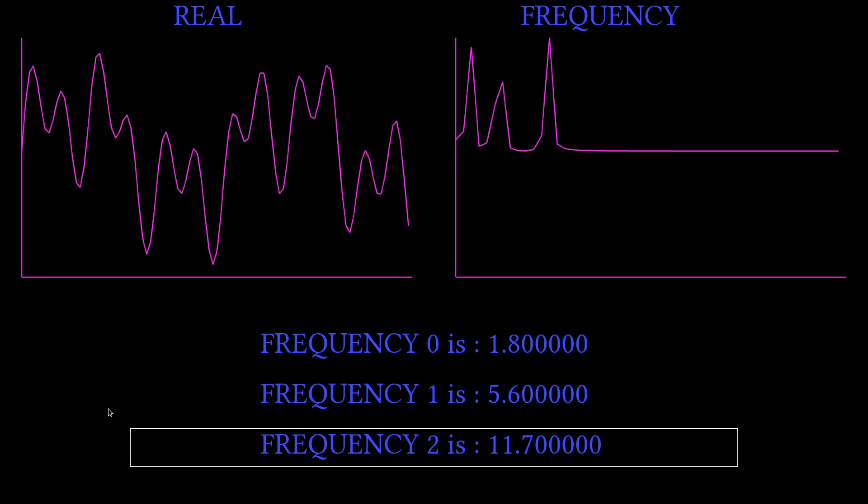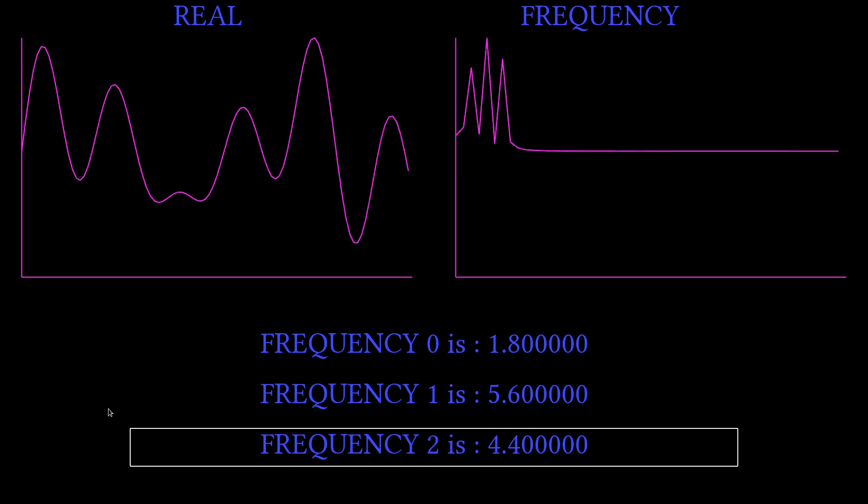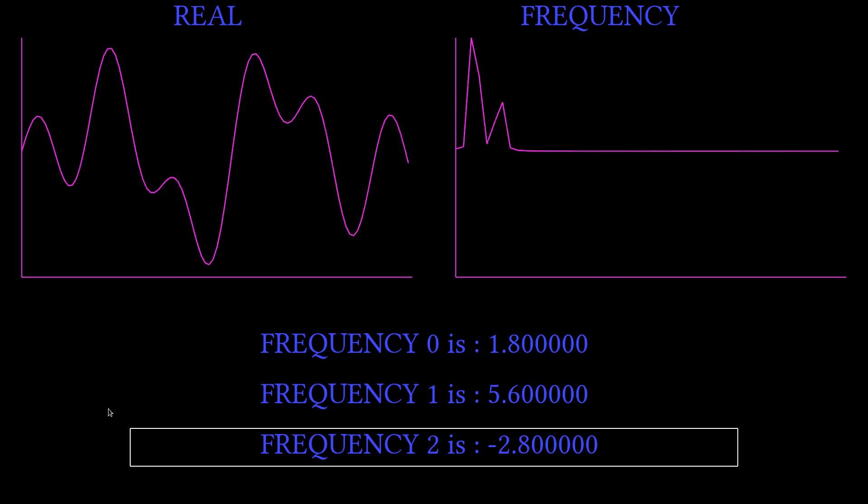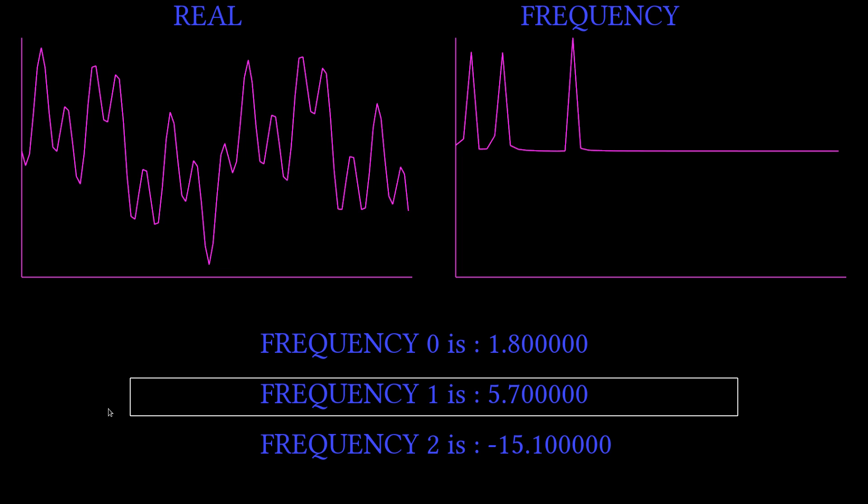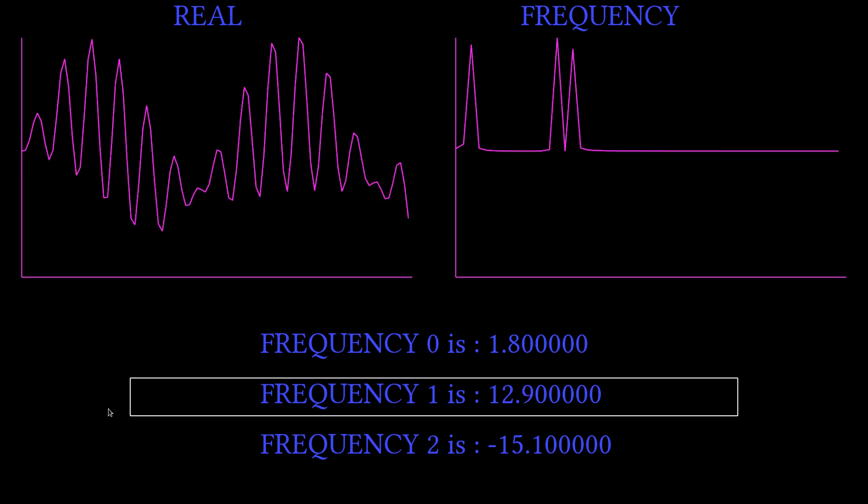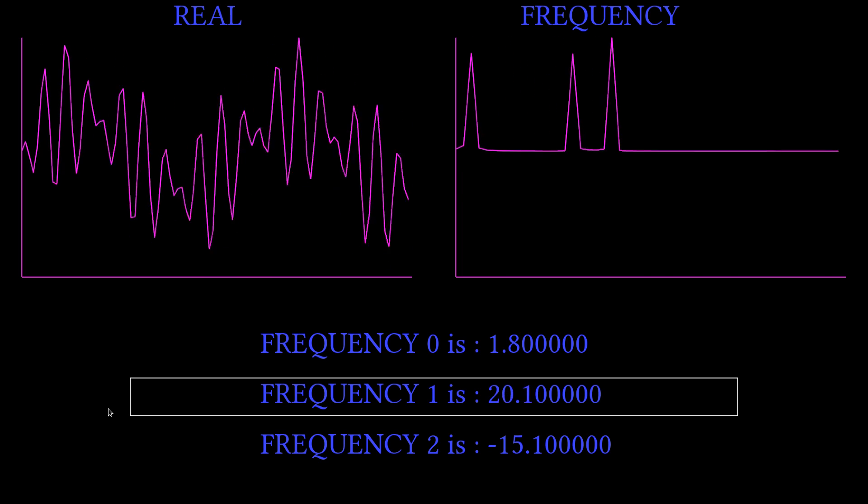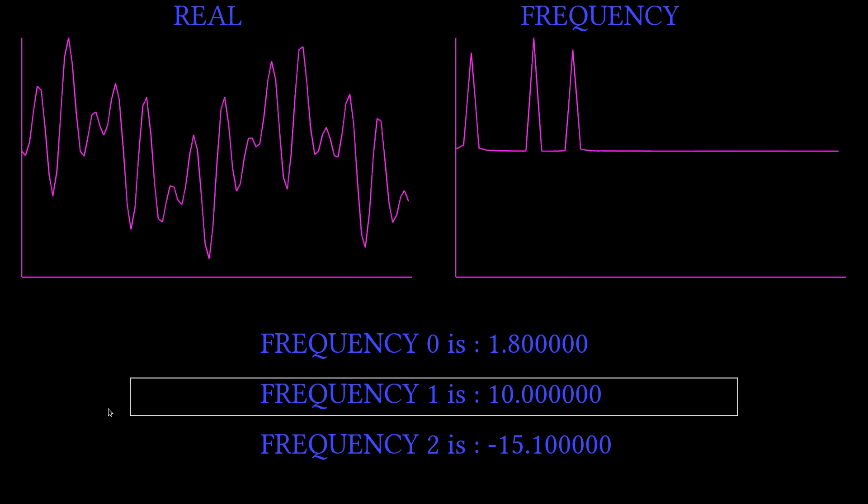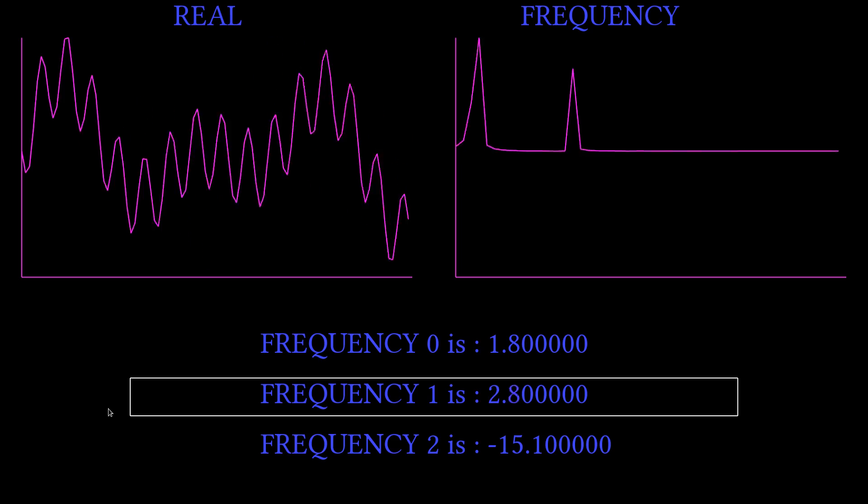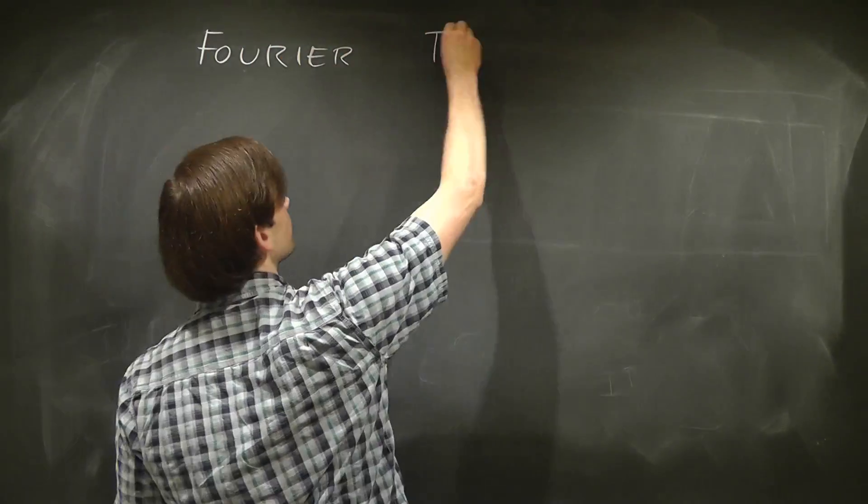If we change the frequency of any one of our waves, the corresponding peak in frequency space moves left or right. This means that we can take any complicated mess of waves and easily determine their components. The trick is that we need some sort of special transformation that allows us to flip back and forth between real and frequency space. This transformation is known as a Fourier transform.